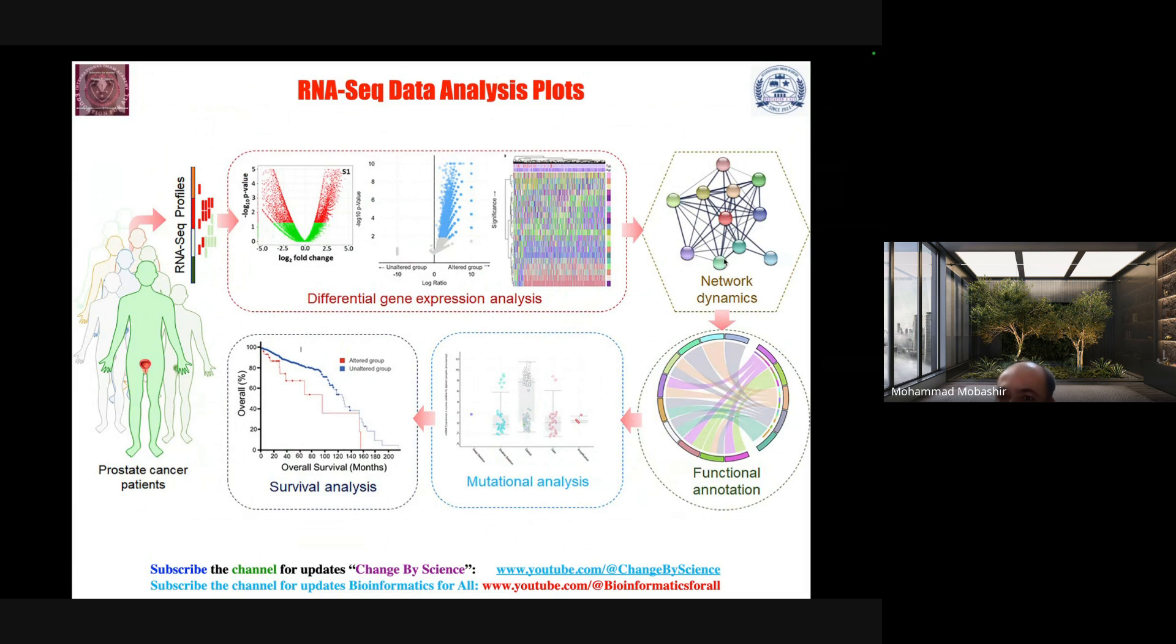Then you can go for network level understanding to understand network dynamics, functional annotation - can we make it on our own or take assistance of software? Then mutational analysis or survival analysis. This is a pipeline for prostate cancer RNA-seq data. As a layman, if you understand your project, you can immediately plot all these figures for your prostate cancer or any type of cancer RNA-seq data profiling.